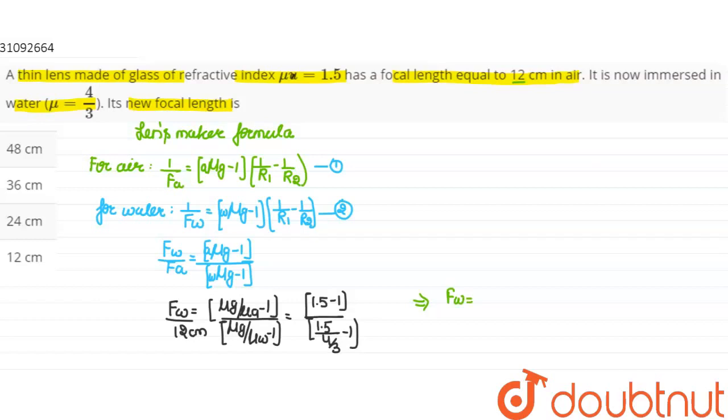So when we solve it, we get focal length in water equals 12 times 0.5 times 4 divided by 0.5. So 0.5 cancels out, we have 48 cm. So focal length will be 48 cm, so A will be our correct answer. Thank you.